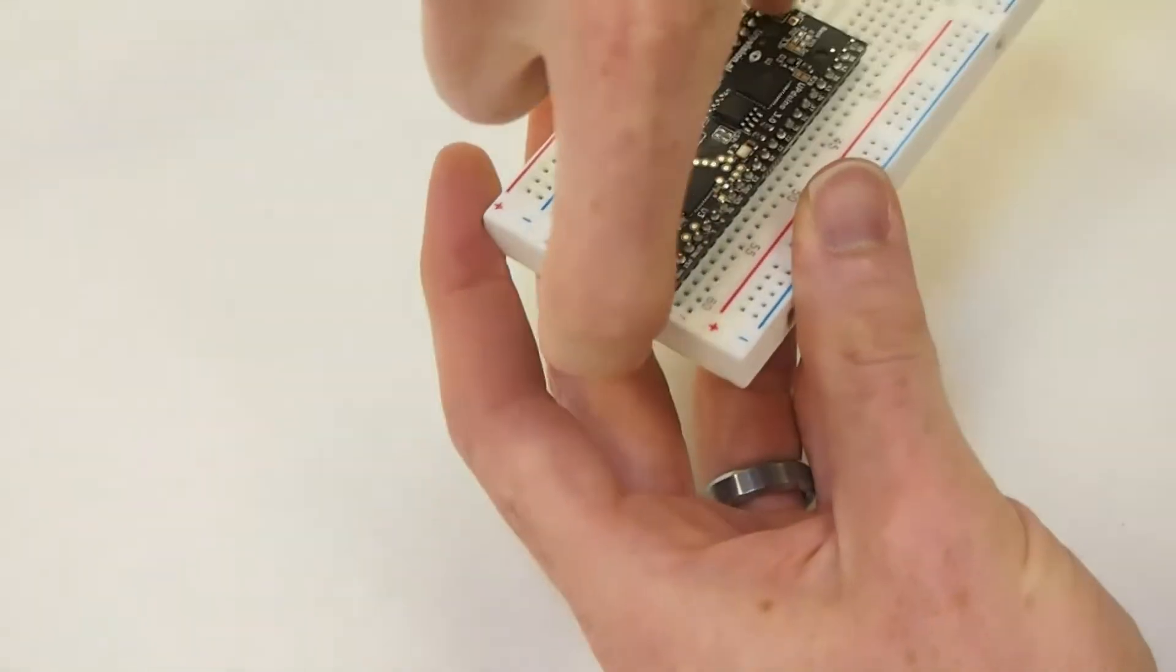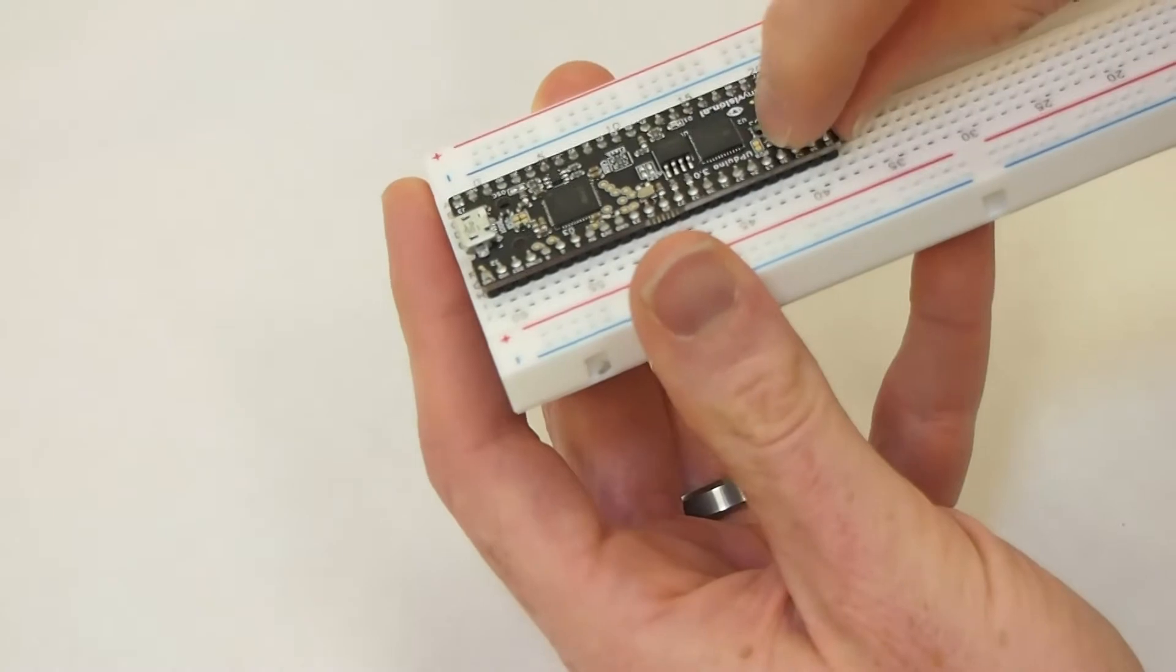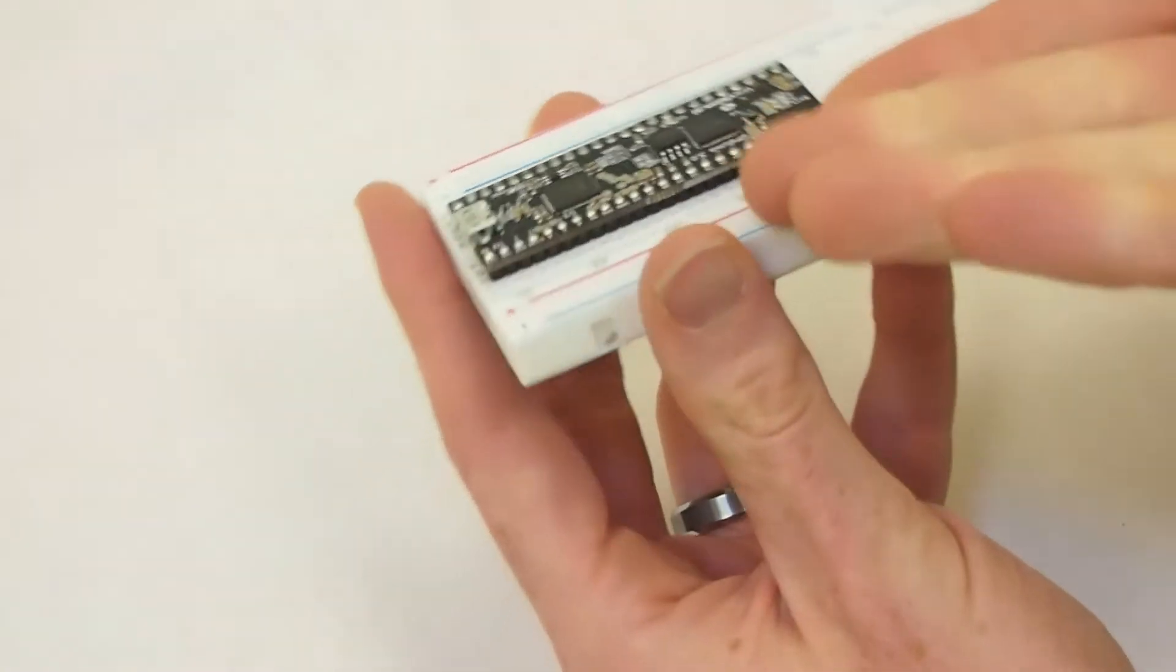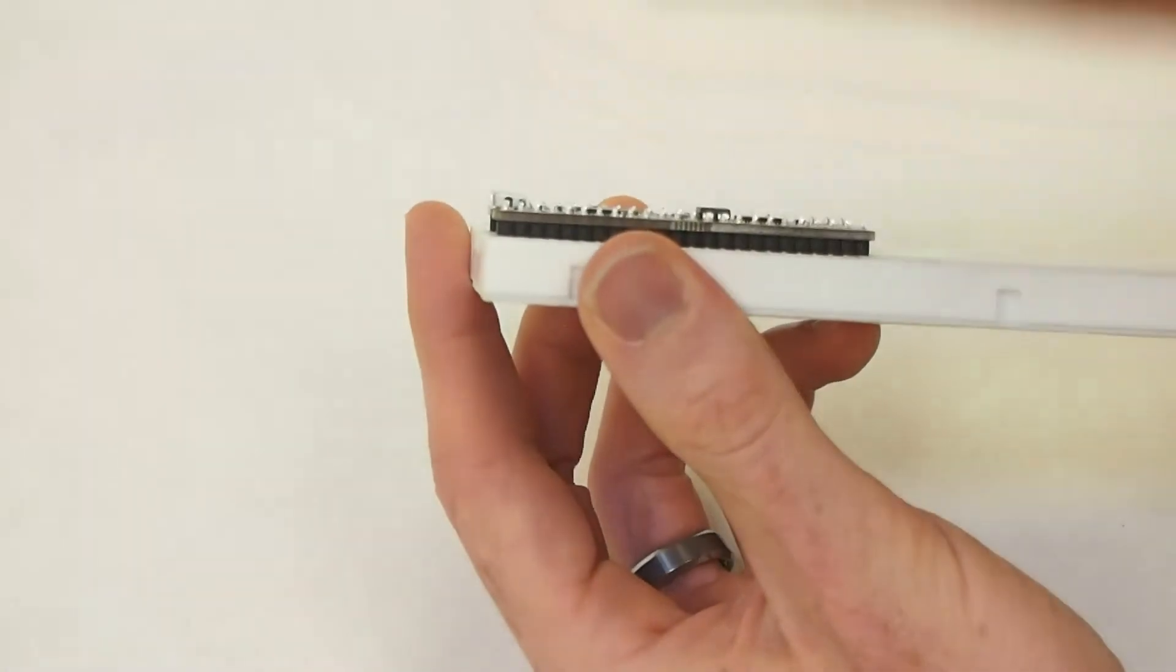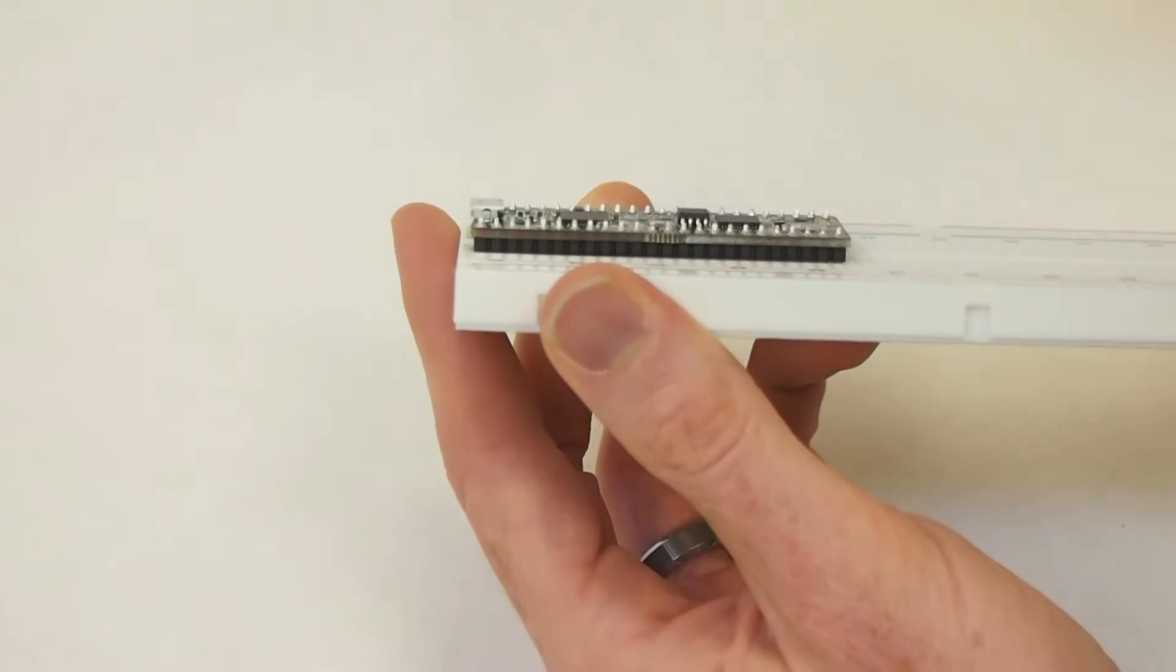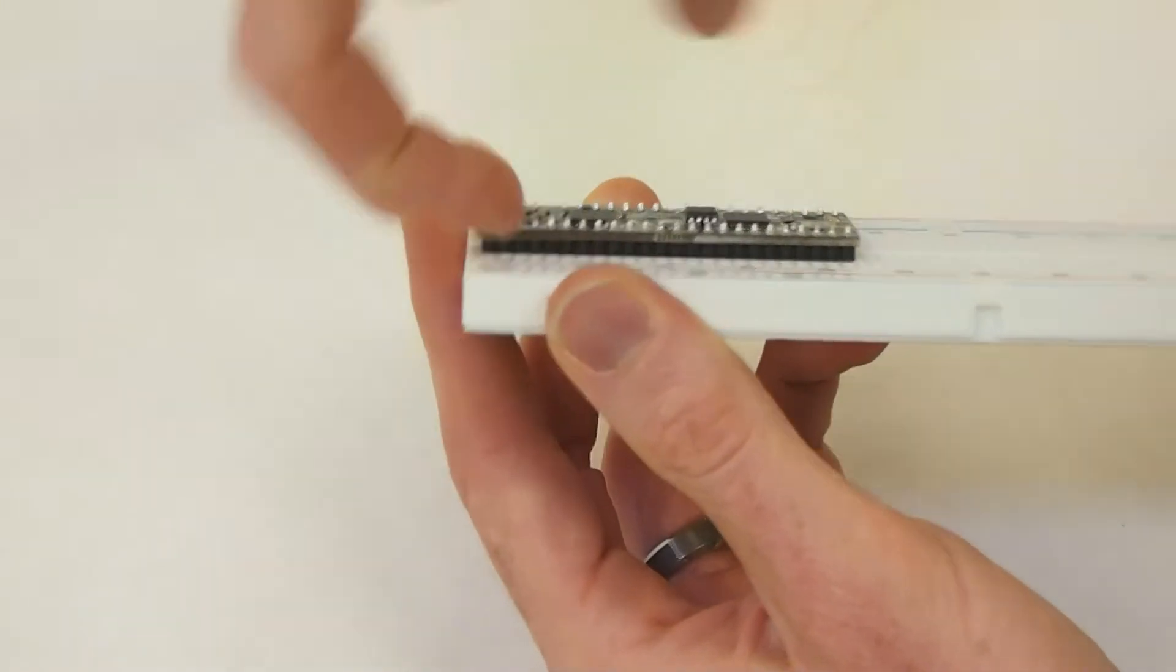If you just pry from one end, you're going to end up bending all of the pins. So it's very important that you pull the FPGA straight out, up and away from the breadboard, without prying one direction or the other.